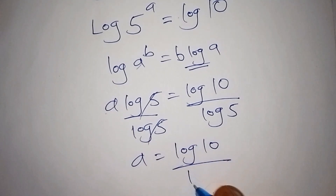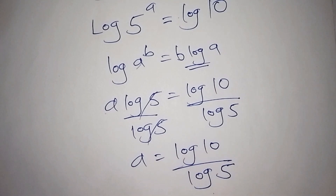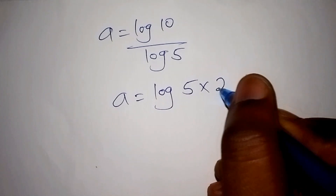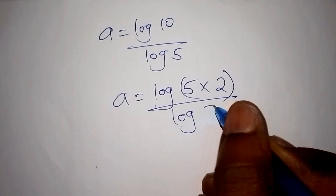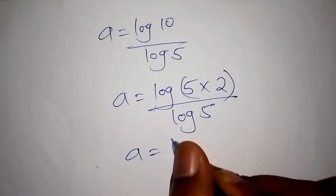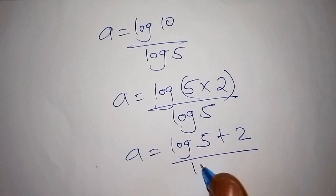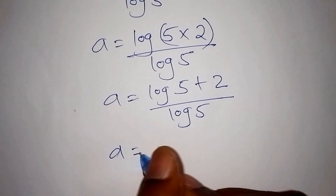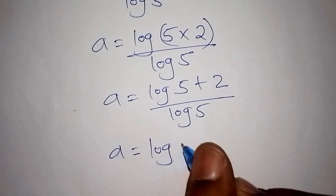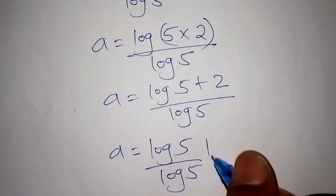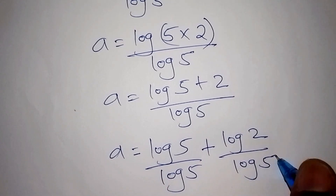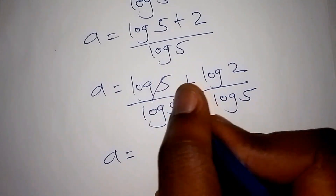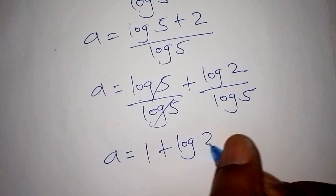Our a is equals to log 10 over log 5. We can still go ahead and simplify: log 10 can be written as log of 5 times 2, all over log 5. So a equals log(5 × 2) over log 5, which by log laws equals log 5 plus log 2, all over log 5. Splitting the fraction, we get log 5 over log 5, plus log 2 over log 5. Since log 5 over log 5 equals 1, we have a equals 1 plus log 2 over log 5.